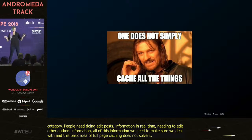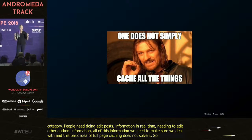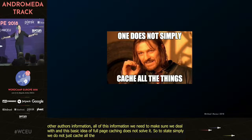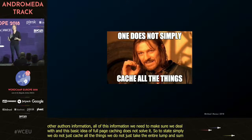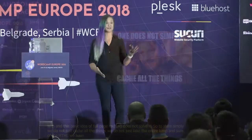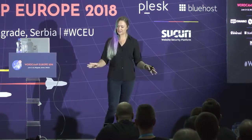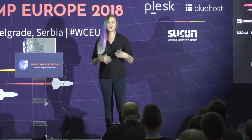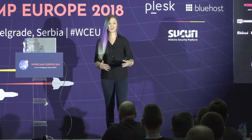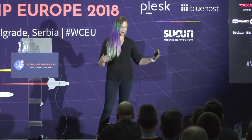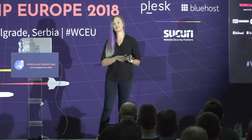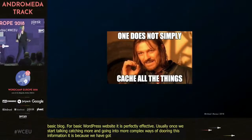To state simply: we do not just cache all the things. We do not just take the entire lump and sum of the HTML we've created and store it for anything more complex than a basic blog. For a basic WordPress website, it's perfectly effective. But usually, once we start talking about caching more and going into more complex ways of storing this information, it's because we've got more than a basic blog or basic WordPress site.